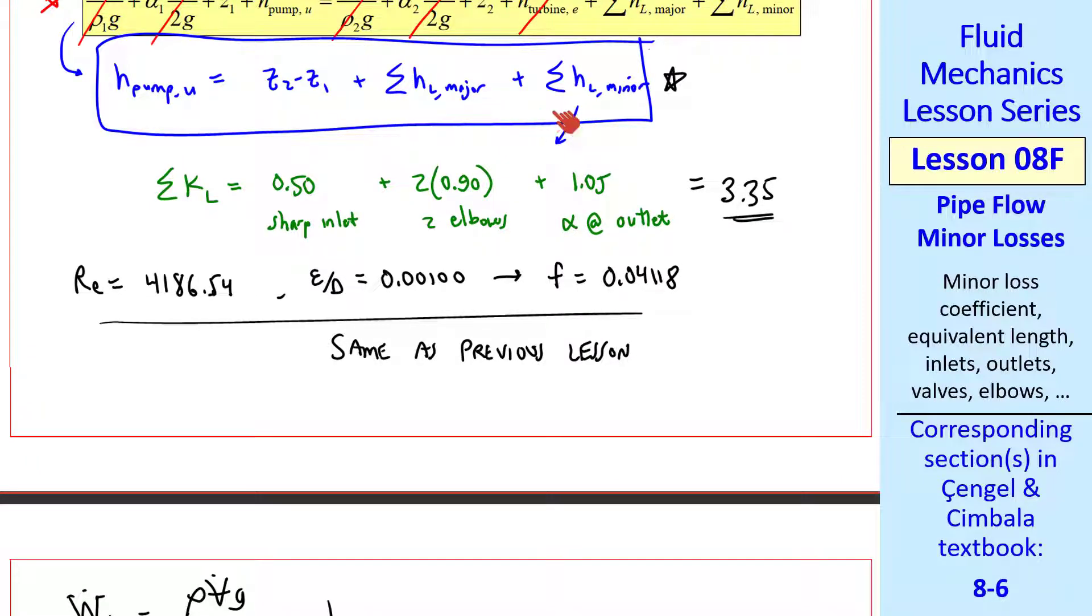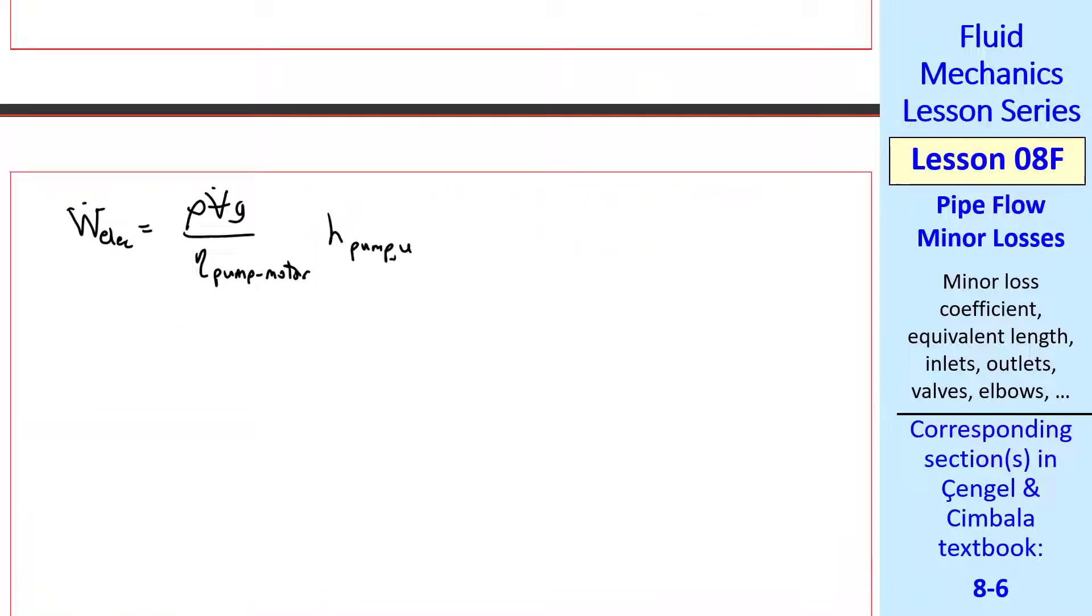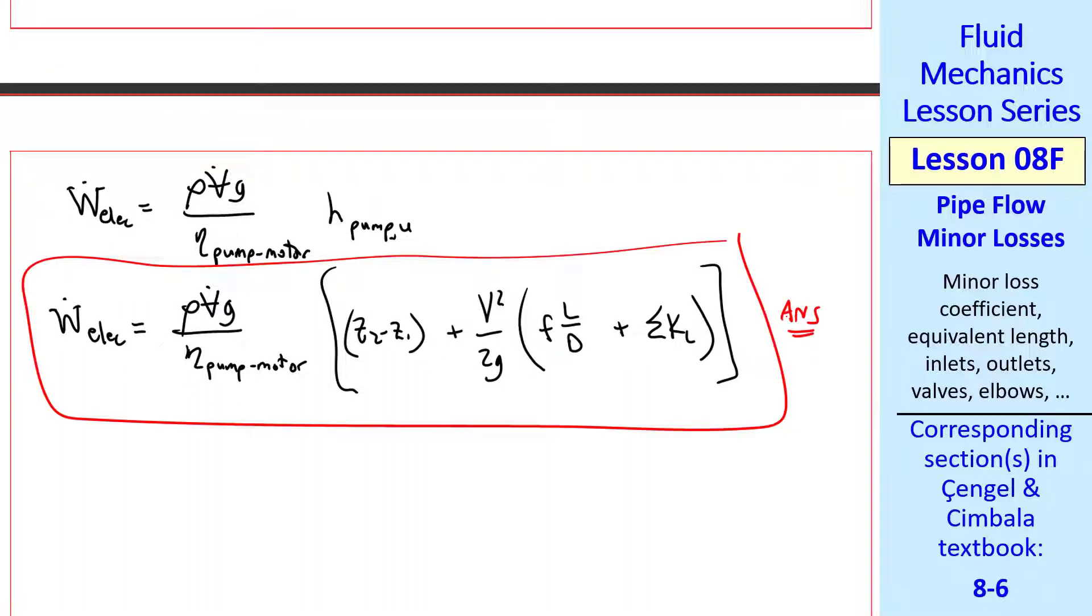And we'll use our simpler equation for the sum of these two, which is HL total. So we get rho V dot G over eta pump motor, times the quantity Z2 minus Z1, plus V squared over 2G, FL over D, the major loss, plus sigma KL, the minor loss. This is our answer in variables.